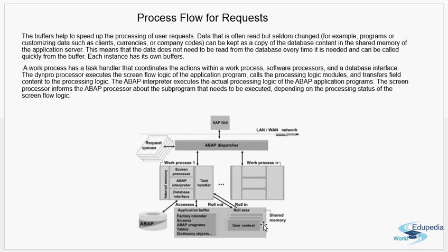Now we'll look at the individual components of a work process. There can be any number of work processes in an SAP instance. First, a work process has internal memory where it stores the user context. It has a task handler that coordinates actions within the work process and manages communication among the various components. The screen processor executes the screen flow logic of the application program, calls the processing logic modules, and transfers field content to the processing logic.